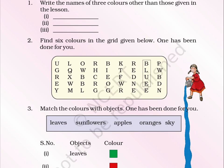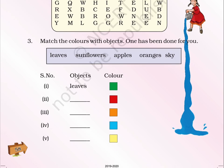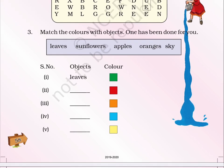3. Match the colors with objects. One has been done for you. Objects: Leaves, sunflowers, apples, oranges, sky. Match each object to its color. 1. Leaves — green.